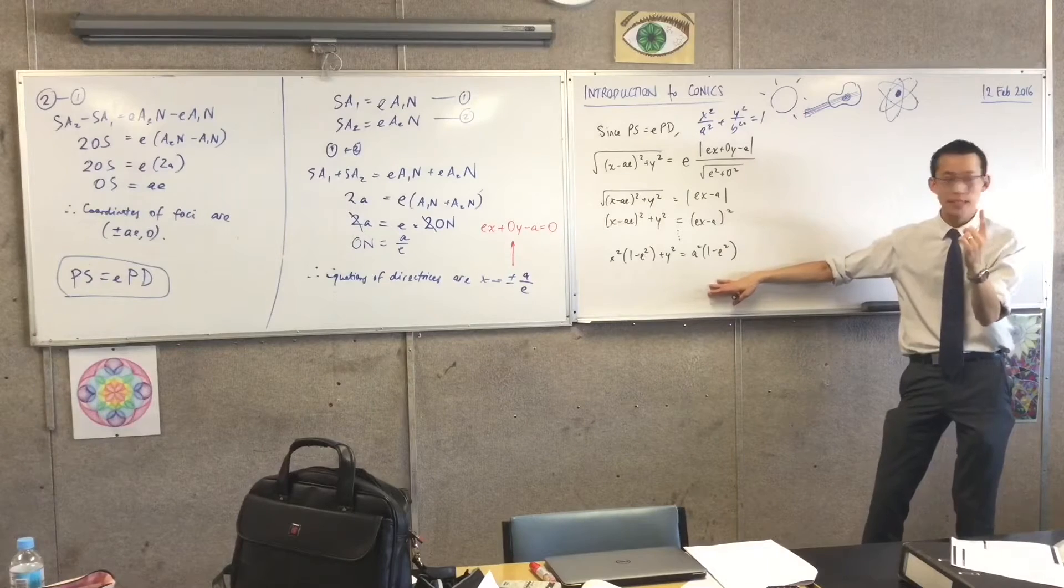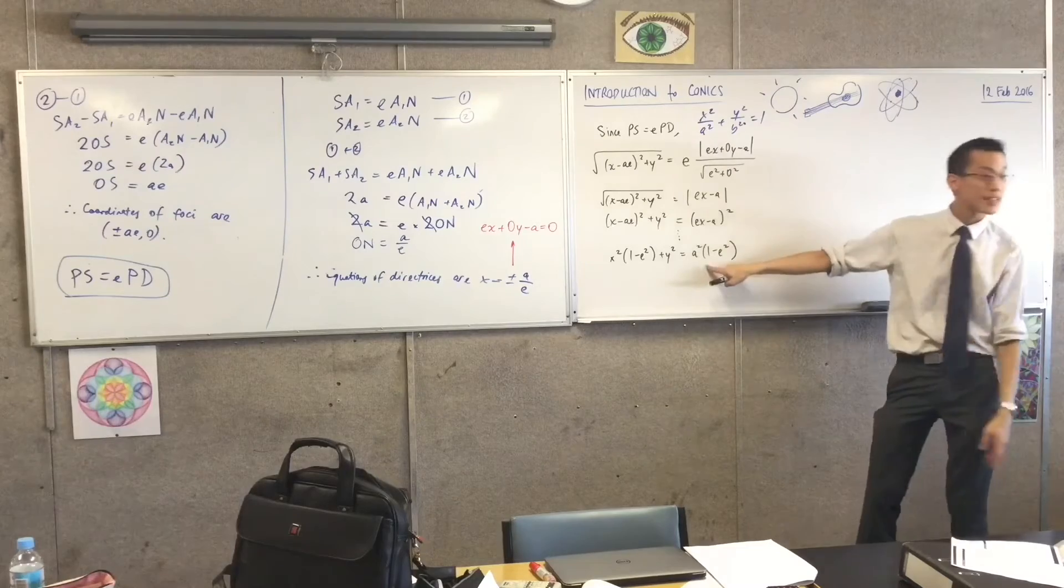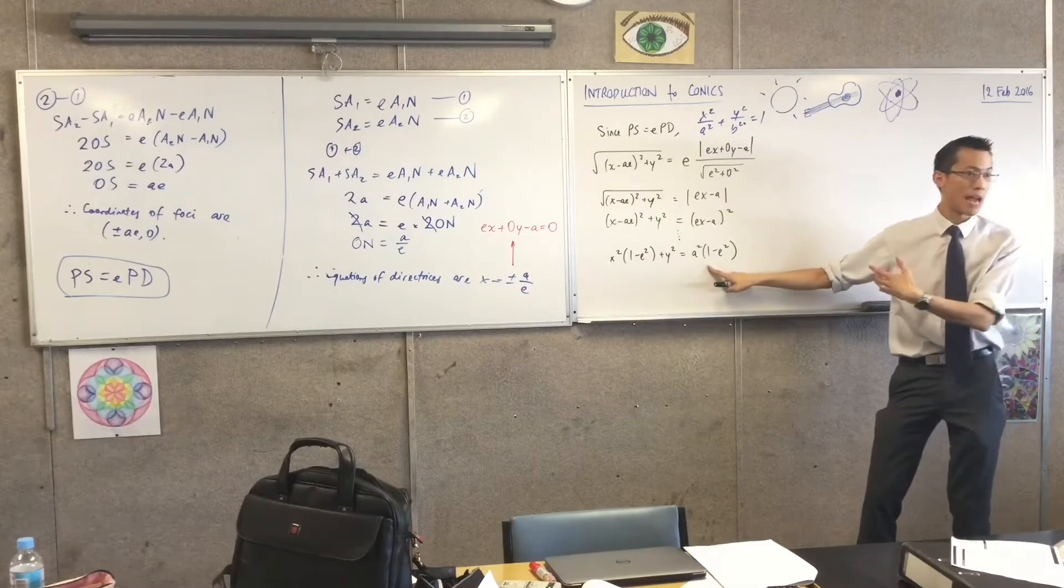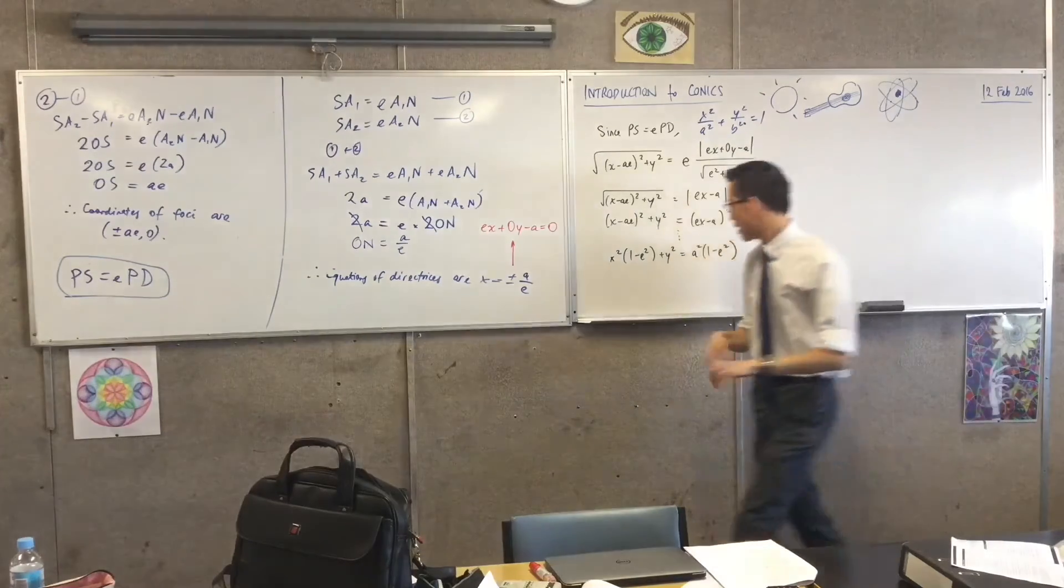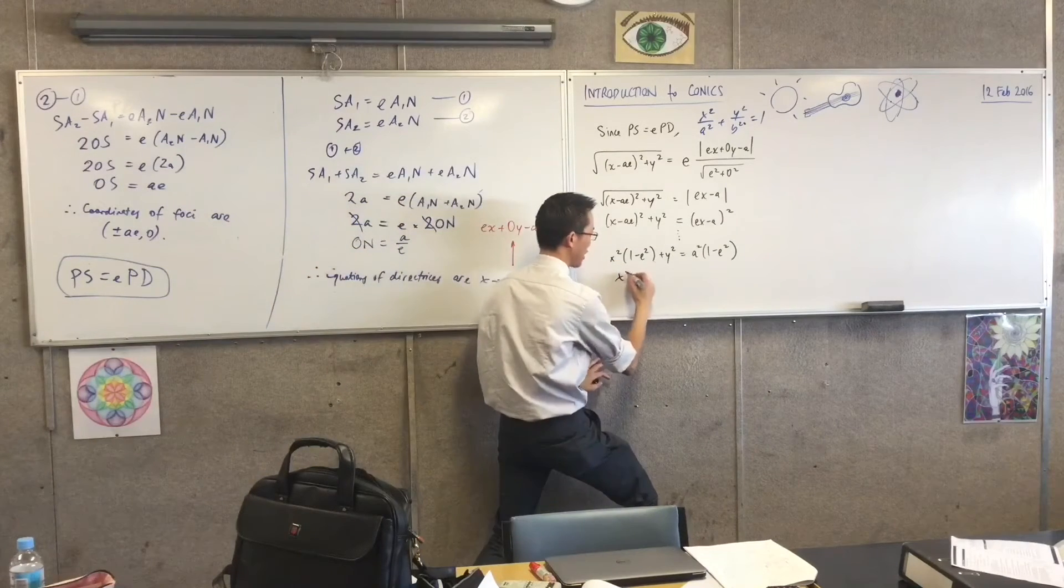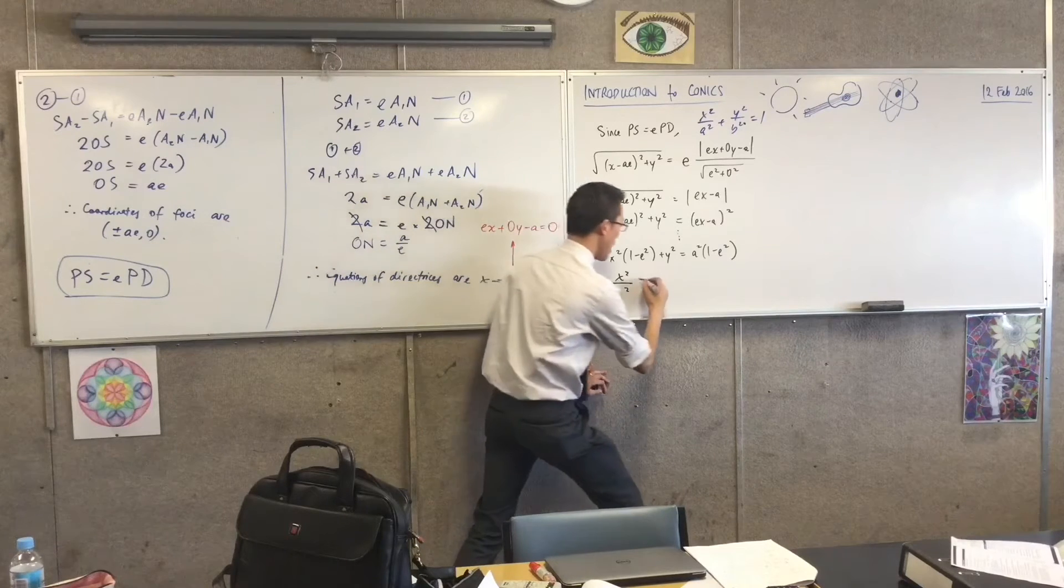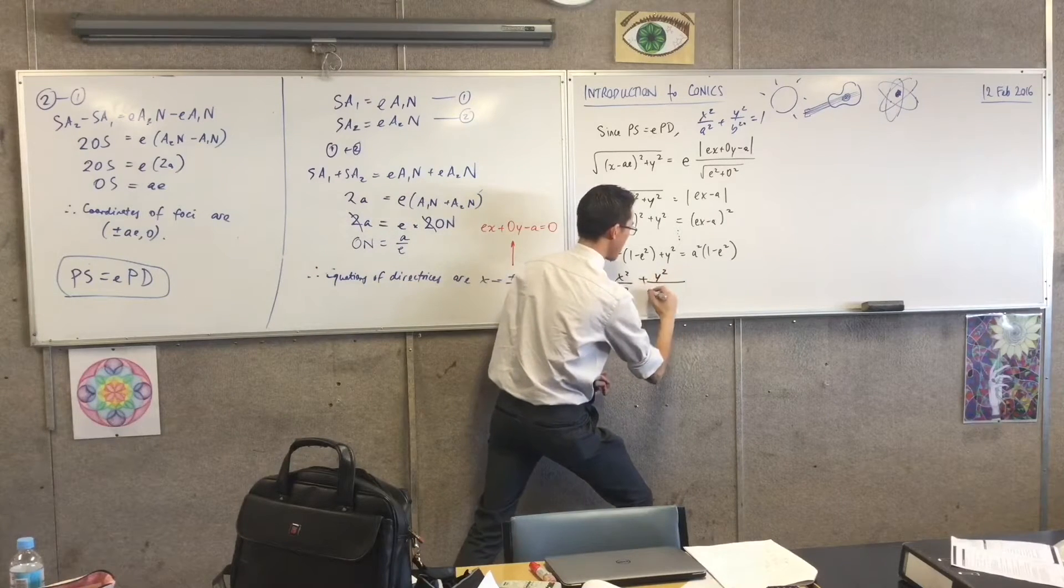I only need one more step to get to what I'm supposed to be. I need to divide by whatever's that, so I get one on the right hand side. Does that make sense? So when I do that, the one minus e squared is cancelled here, so you just get left with x squared on a squared, and then you get this.